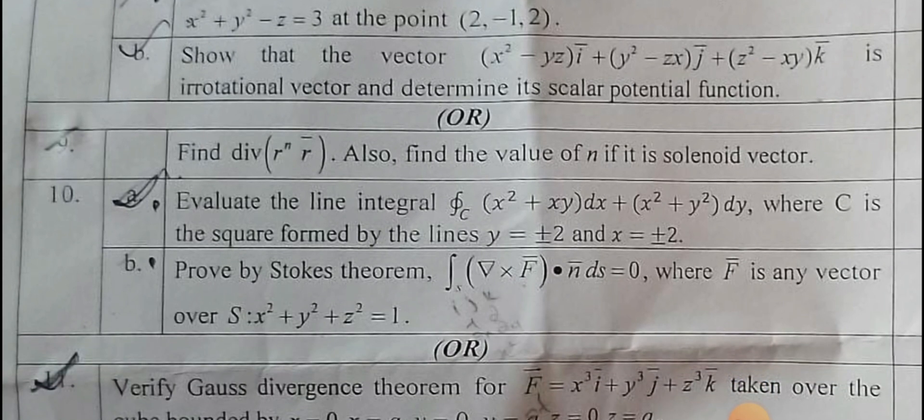Tenth one: evaluate the integral. Line integral is given where C is the square formed by the lines y = ±2 and x = ±2. This can be done in two ways. They are asking to evaluate it. Directly you can use the line integral by constructing a square in the two-dimensional graph. The square is a combination of four lines.